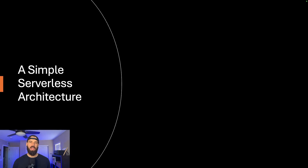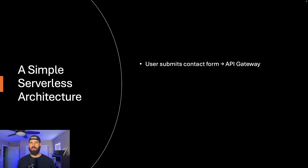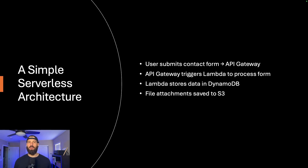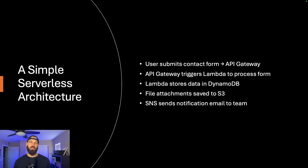Let's take a look at a real-world example: a contact form submission system, something that nearly every website has. A visitor fills out a form on your website — maybe providing their name, a message, and a file upload. When they click submit, that request is sent to an API Gateway endpoint, which then invokes a Lambda function. This function sanitizes the inputs, parses any attachments, and determines what to do next. The form data — like name, email, message, and timestamp — is written to DynamoDB so it can be queried later. If the user uploaded a file, like a resume or an image, it's stored in an S3 bucket with a unique key. Once the message is stored, the function publishes a notification to an SNS topic, which triggers an email notification to your support or sales team letting them know there's a new contact form submission.